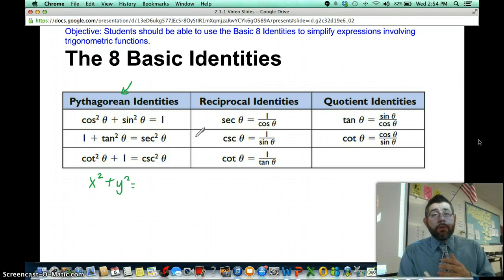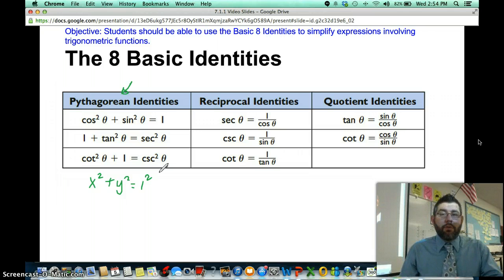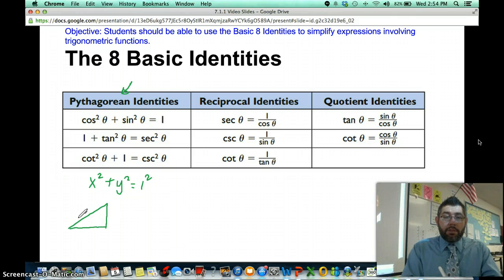And the sine is the y value in the unit circle. The radius of the unit circle is 1. Back a long time ago, hopefully in geometry or conic sections, you found the equation of a circle: x squared plus y squared equals 1.